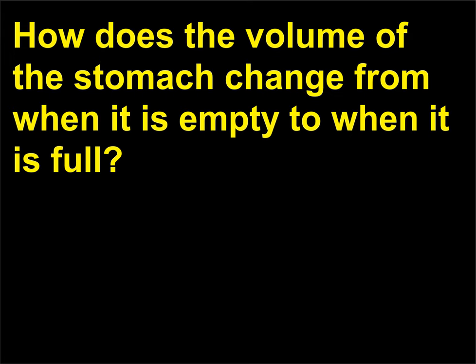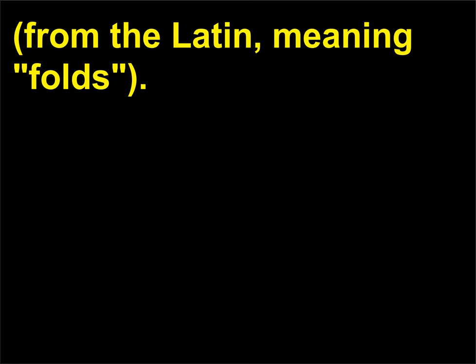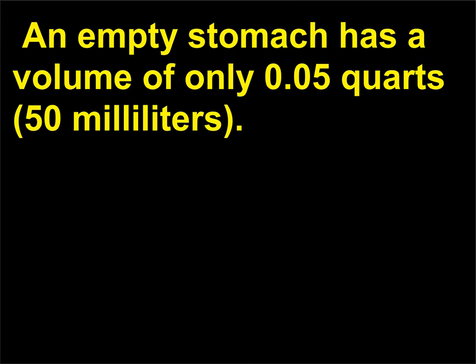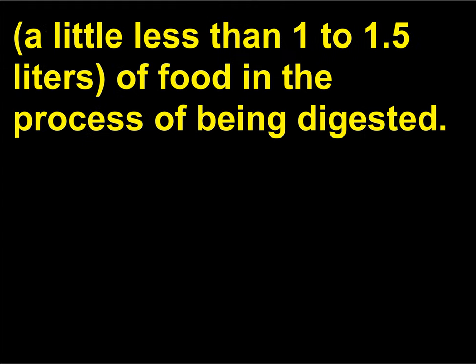How does the volume of the stomach change from when it is empty to when it is full? The inner mucous membrane of the stomach contains branching wrinkles called rugae, from the Latin meaning 'folds.' As the stomach fills, the rugae flatten until they almost disappear when the stomach is full. An empty stomach has a volume of only 0.05 quarts (50 milliliters). A full stomach expands to contain 1 to 1.5 quarts (a little less than 1 to 1.5 liters) of food in the process of being digested.